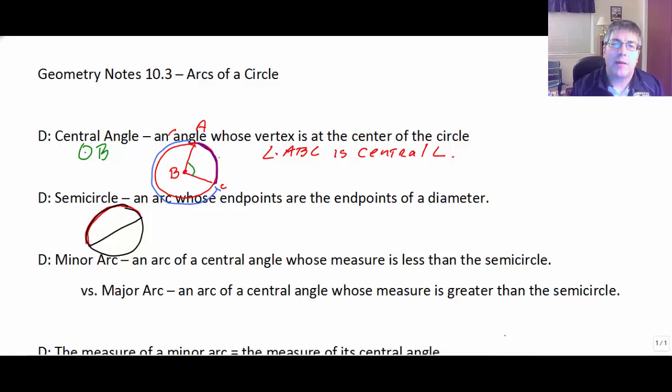And its intercepted arc is arc AC. So it's opening up. Angle ABC opens up and intercepts arc AC.